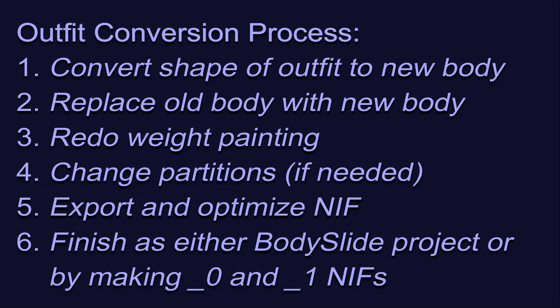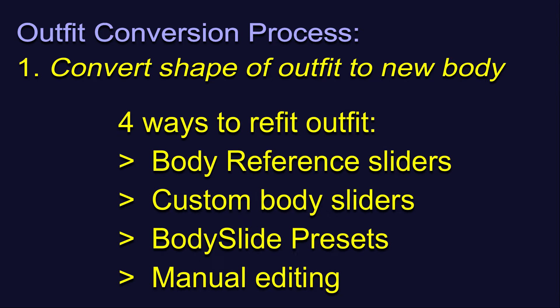If you are converting an outfit that has HDT-SMP physics, there are some additional considerations. We are not going to do a physics-enabled outfit until later in the series — I strongly suggest that you practice converting a regular outfit first before you tackle one with physics. One of the most time-consuming parts is converting the shape of the outfit. There are four approaches for refitting: body reference conversion sliders, custom body sliders, using BodySlide presets, and manual conversion. We'll be doing an example of each approach in the upcoming videos.